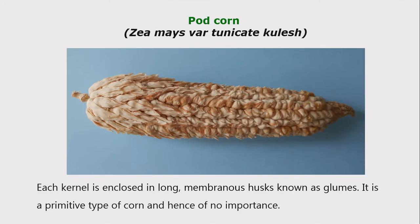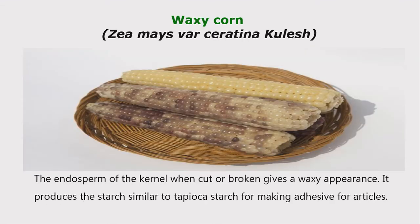Pod corn — Zea mays var. tunicata. Each kernel is enclosed in a long membranous husk known as glumes. It is a primitive type of corn and hence doesn't have much importance nowadays. Next is waxy corn — Zea mays var. ceratina. The endosperm of the kernel when cut or broken gives a waxy appearance. It produces a starch similar to tapioca starch and is mainly used for the preparation of gums and adhesive articles.